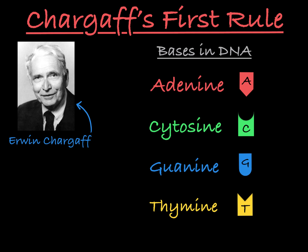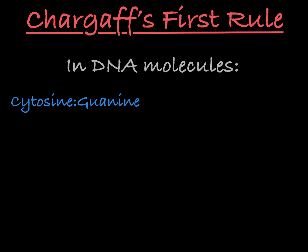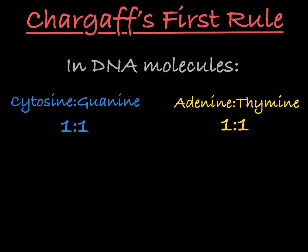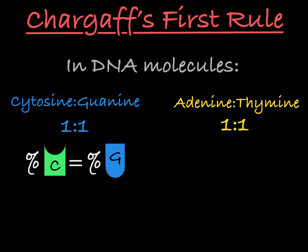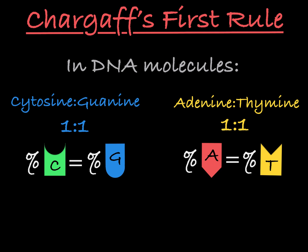In his experiments, he observed that the ratio of cytosine to guanine was one-to-one, and the ratio of adenine to thymine was also one-to-one. This means that the molecules of DNA he observed were made up of equal percents cytosine and guanine, and there were also equal percents adenine and thymine.